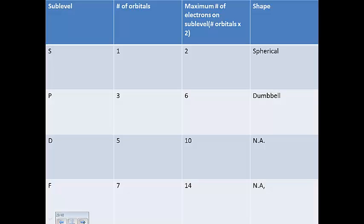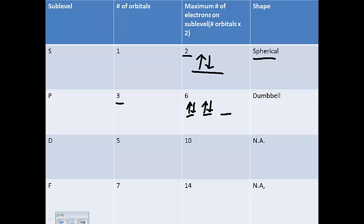Here are the shapes. The S sublevel has only one orbital, so it can hold only two electrons, and its shape is spherical. The P sublevel has three orbitals — each can hold two electrons, for a total of six electrons — and the P orbitals look like dumbbells. Each arrow in the orbital diagram indicates an electron.